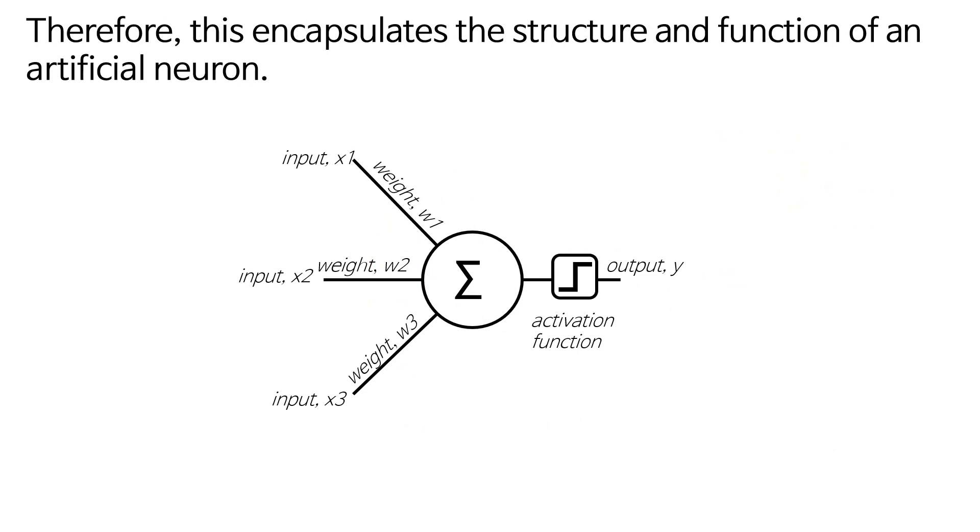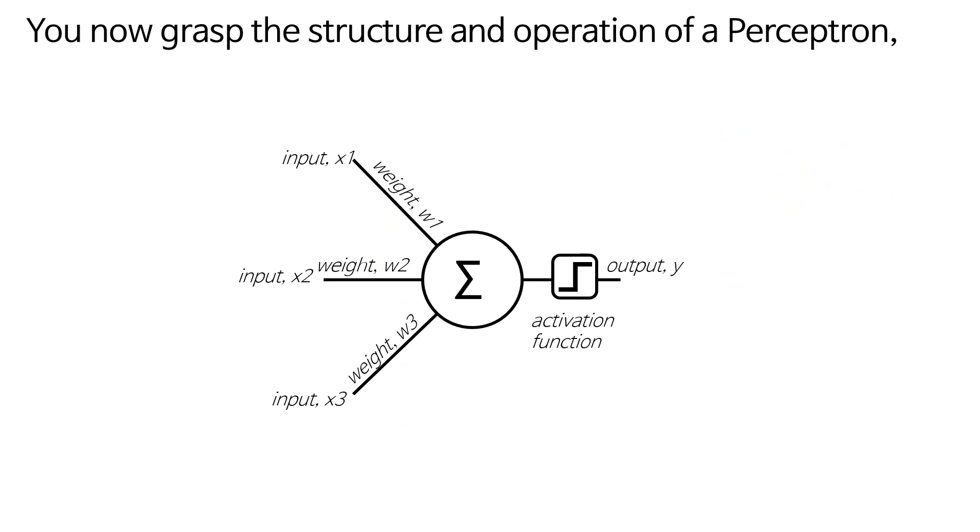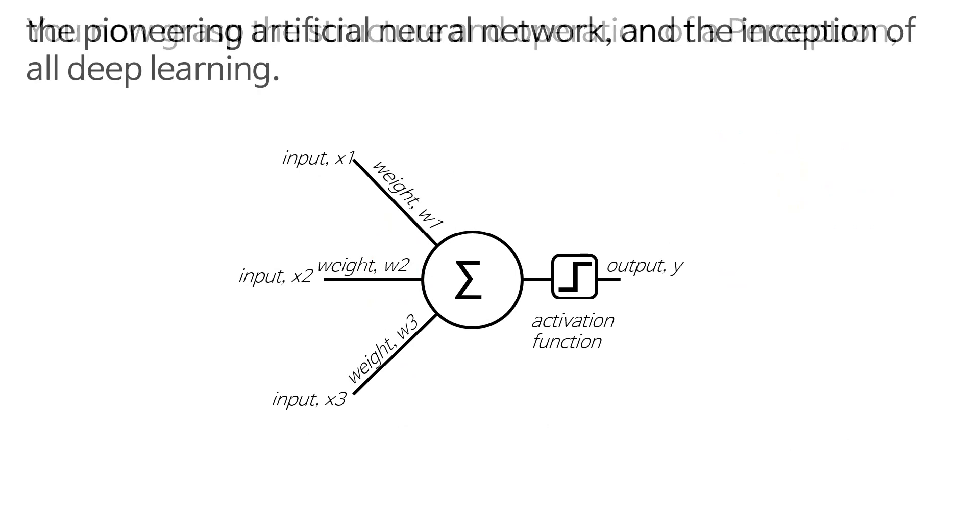Therefore, this encapsulates the structure and function of an artificial neuron. You now grasp the structure and operation of a perceptron, the pioneering artificial neural network and the inception of all deep learning.